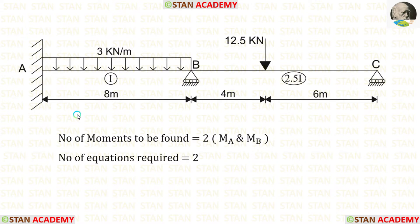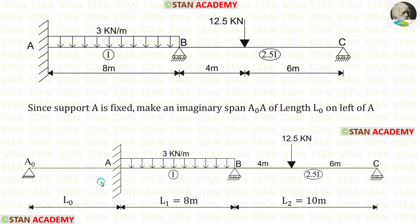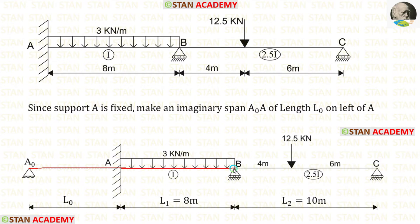Using two spans, we can make one equation. In this beam, we have only two spans AB and BC. Using these two spans, we can form only one equation. But we need two equations. To make the second equation, let us make an imaginary span on the left of fixed end A. On the left of A, I have made an imaginary span A0A having the span of L0. Using the spans A0A and AB, we can make one equation. So, totally, now we can make two equations.